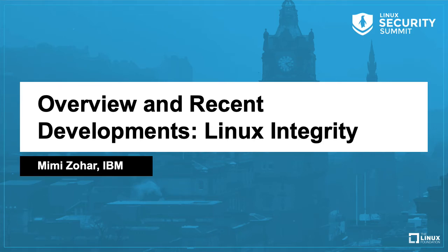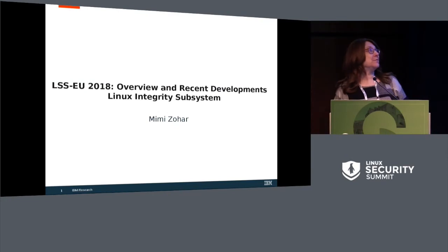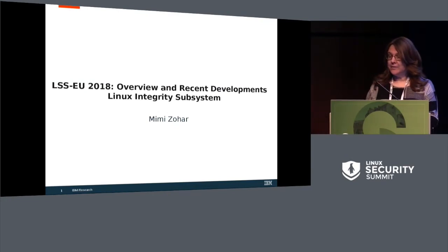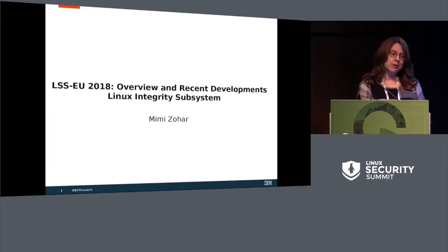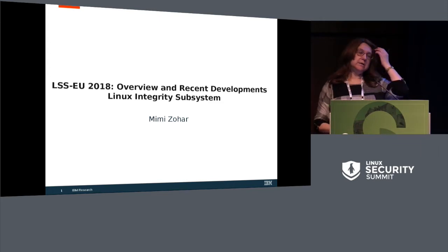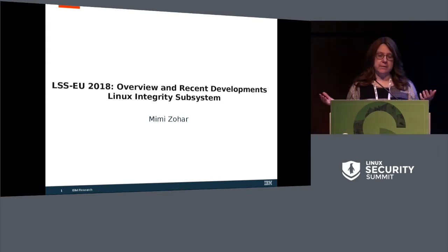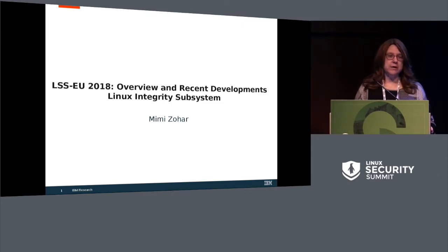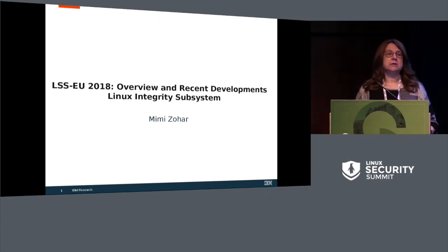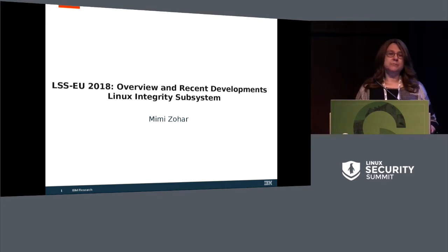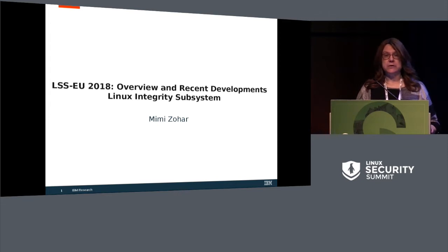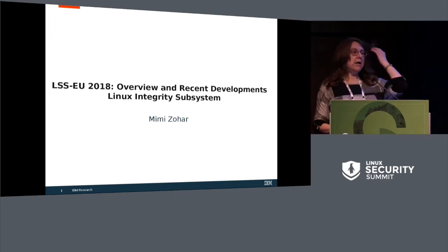Good morning. We're going to be discussing the Linux integrity subsystem. What comprises the Linux integrity subsystem? Basically, there are two parts: IMA and EVM. It's dependent on a number of other subsystems, some of which were developed specifically for this use. The other ones are trusted and encrypted keys. Dimitri upstreamed the MPI library used for signature verification. And of course, the TPM.